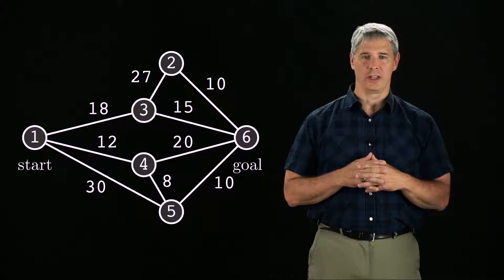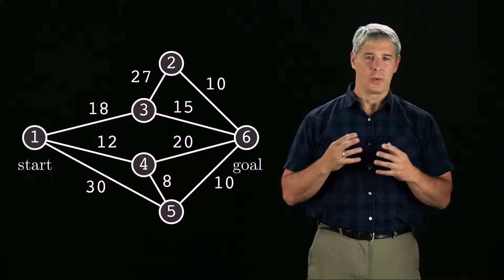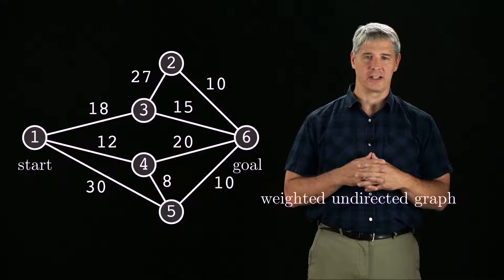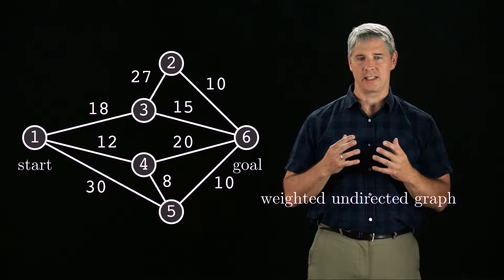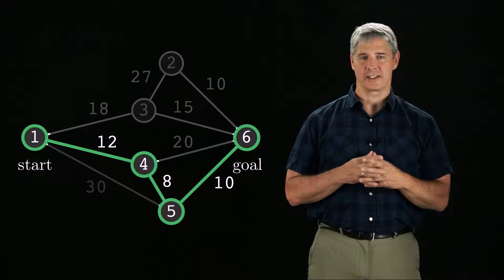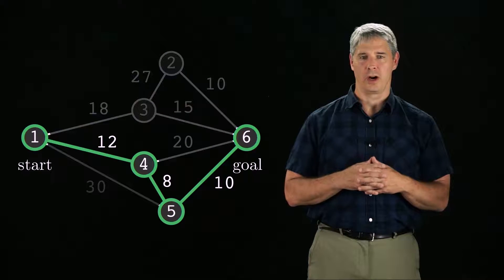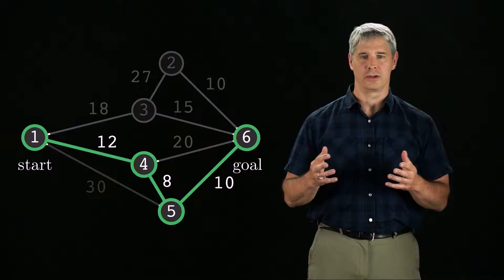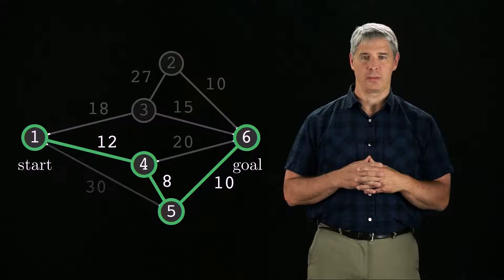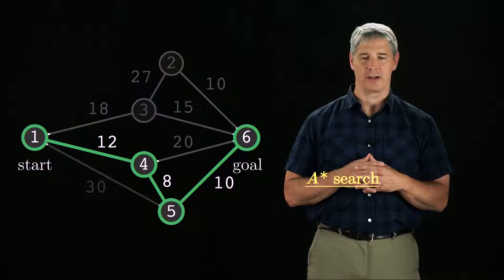For example, going from node 1 to node 3 has a cost of 18. We now have a weighted undirected graph. In this video, I'll focus on an undirected graph, but it's easy to generalize graph search to directed graphs. For this graph, the shortest path has a cost of 30 and goes from node 1 to node 4 to node 5 to node 6. To find the lowest cost path, we'll use A-star graph search, one of the most useful graph search algorithms.